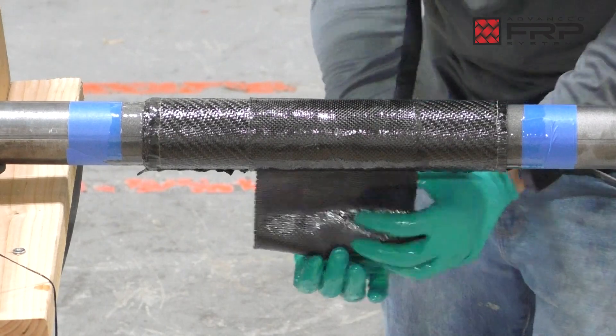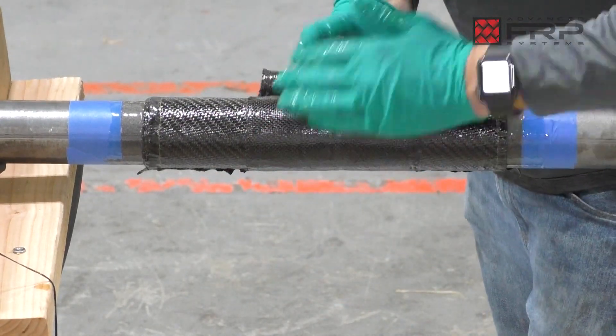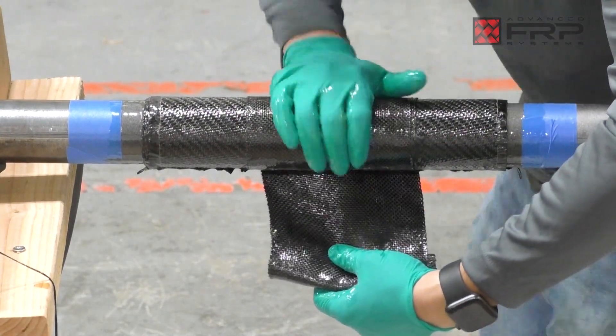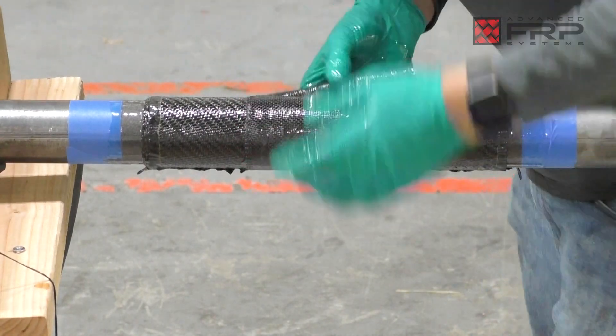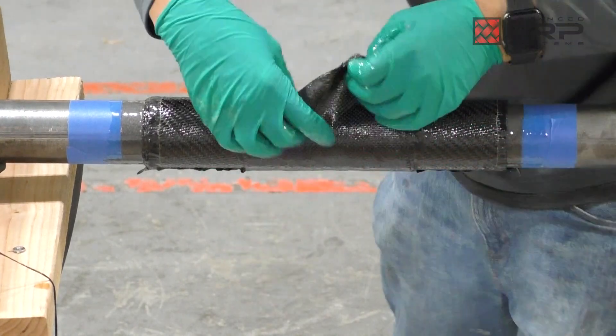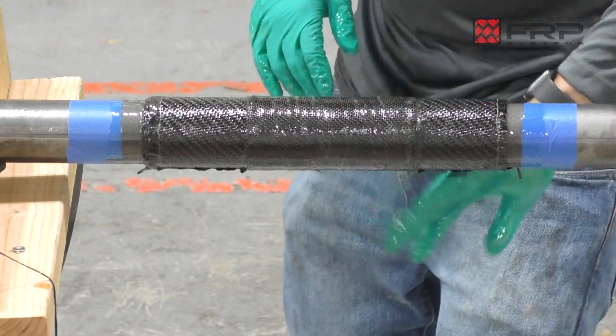Continue to line up the edges with each other. Always make sure to massage the wrap in the same direction as you are wrapping for a tight application, especially as the layers of carbon fiber increase. Allow carbon fiber to cure for 30 minutes.